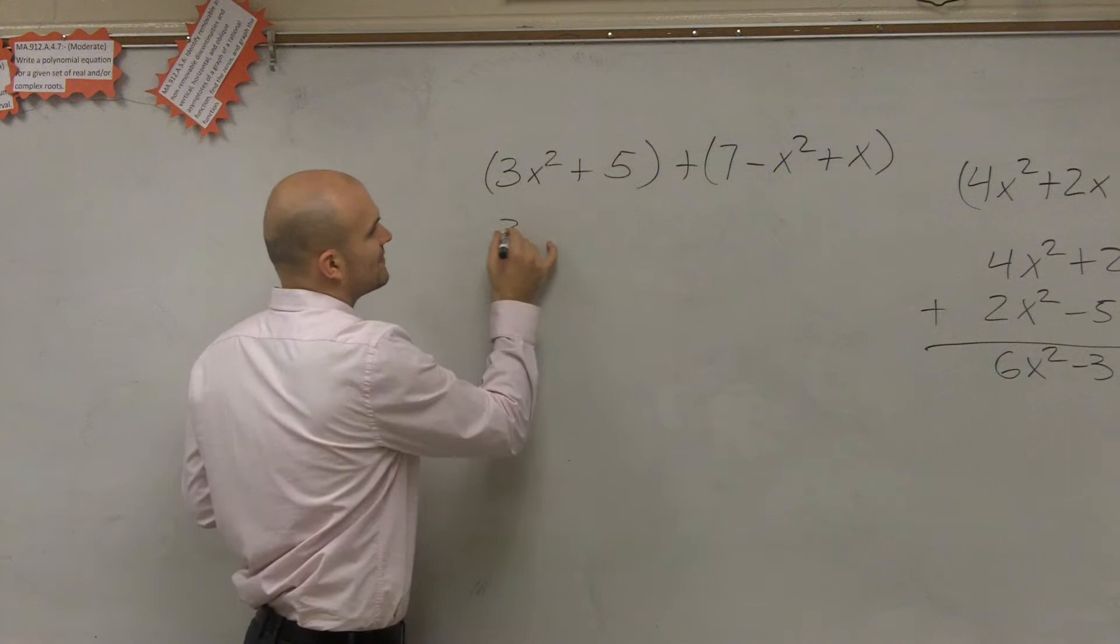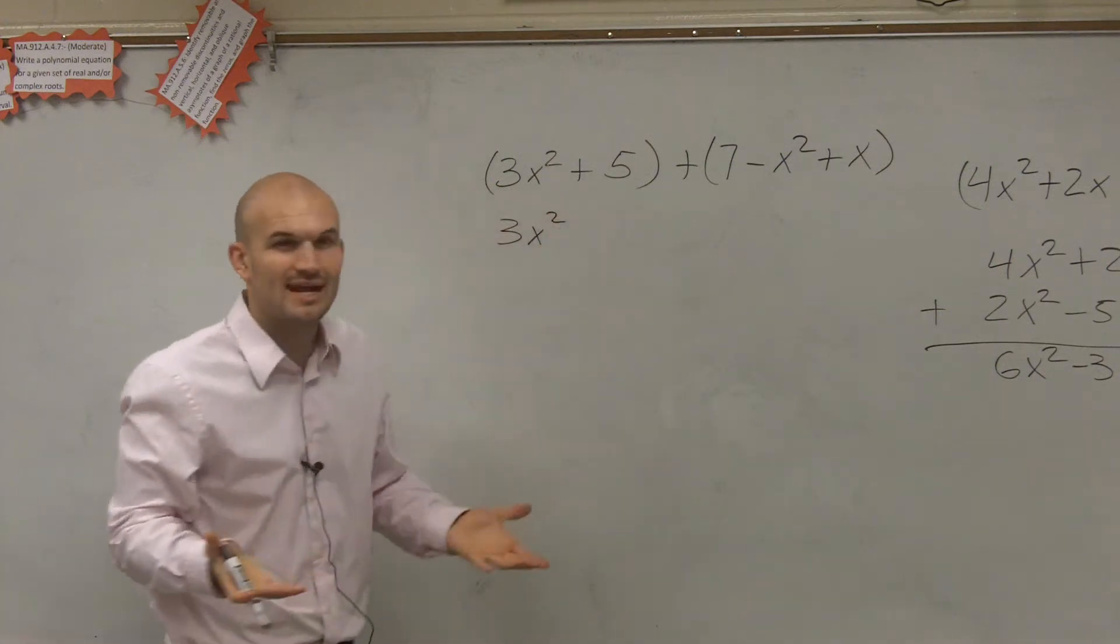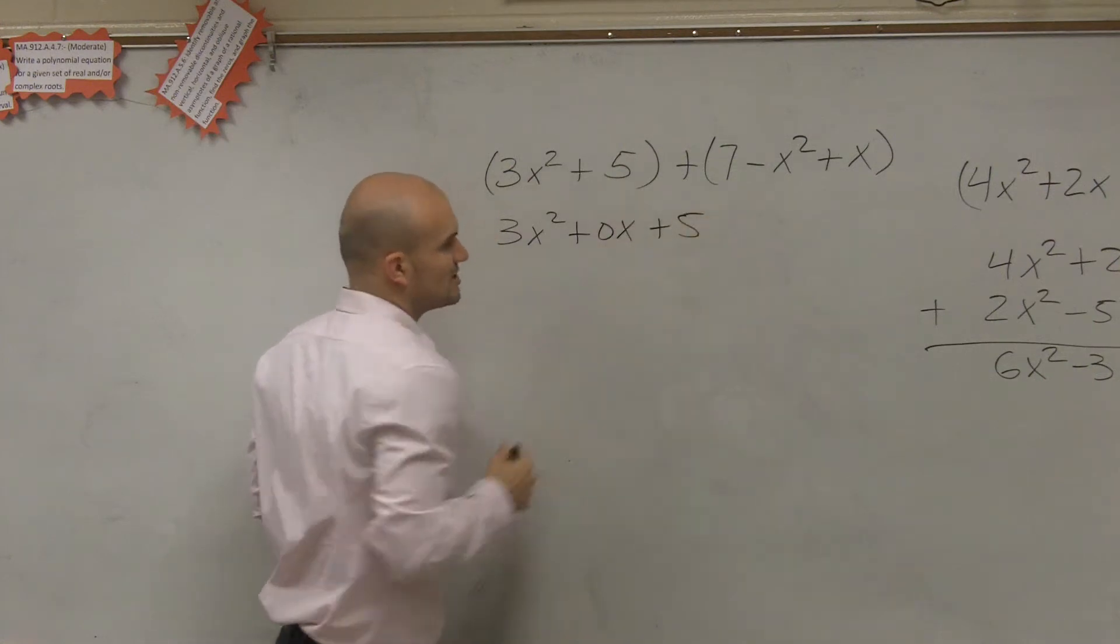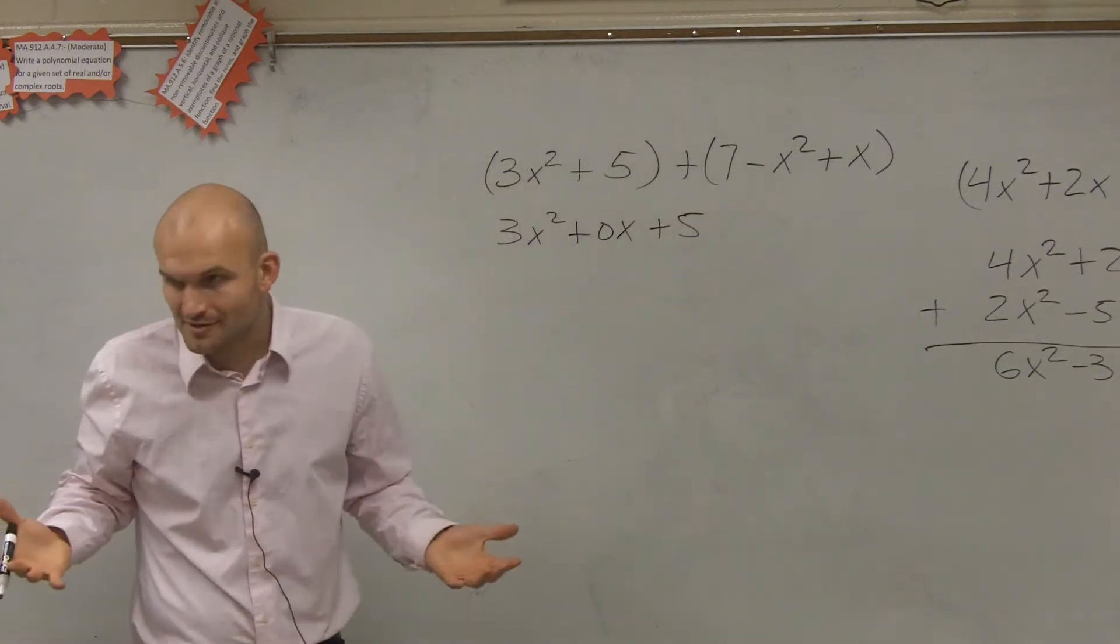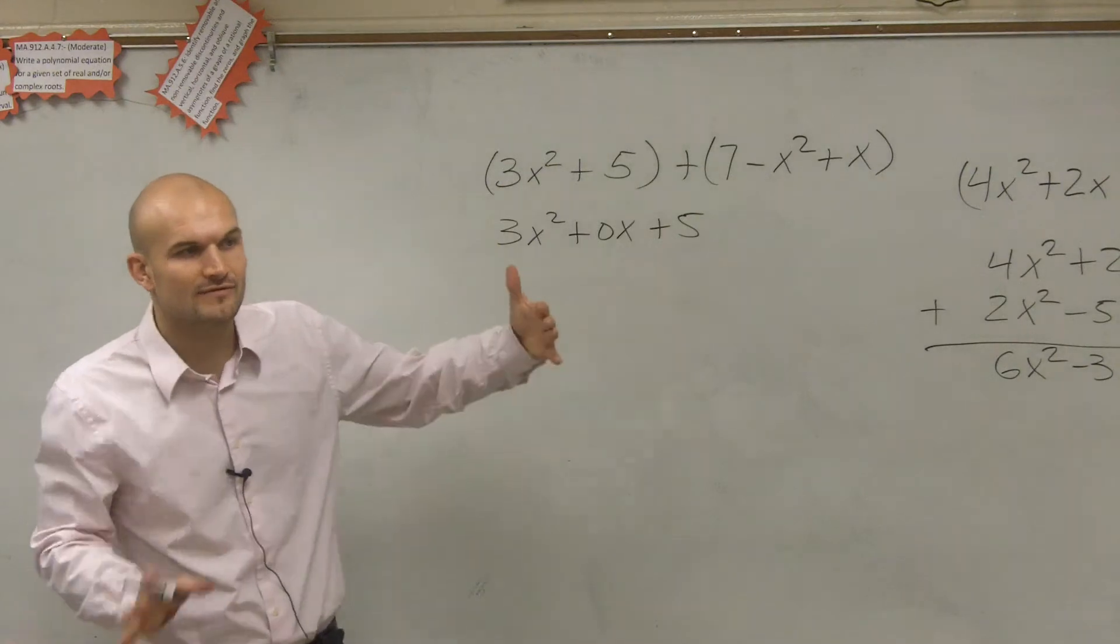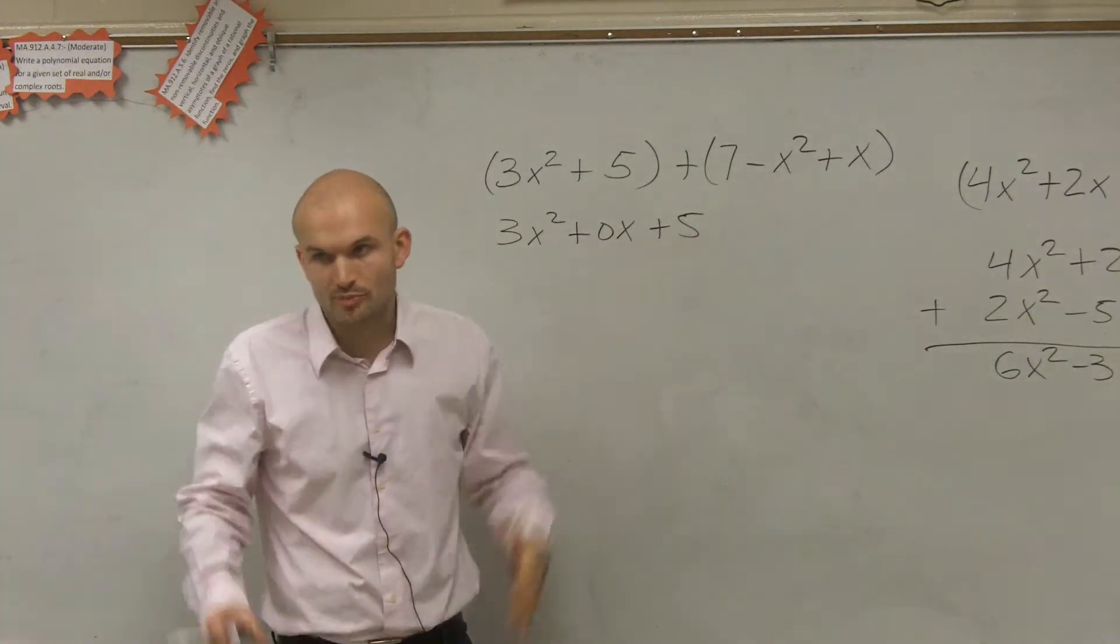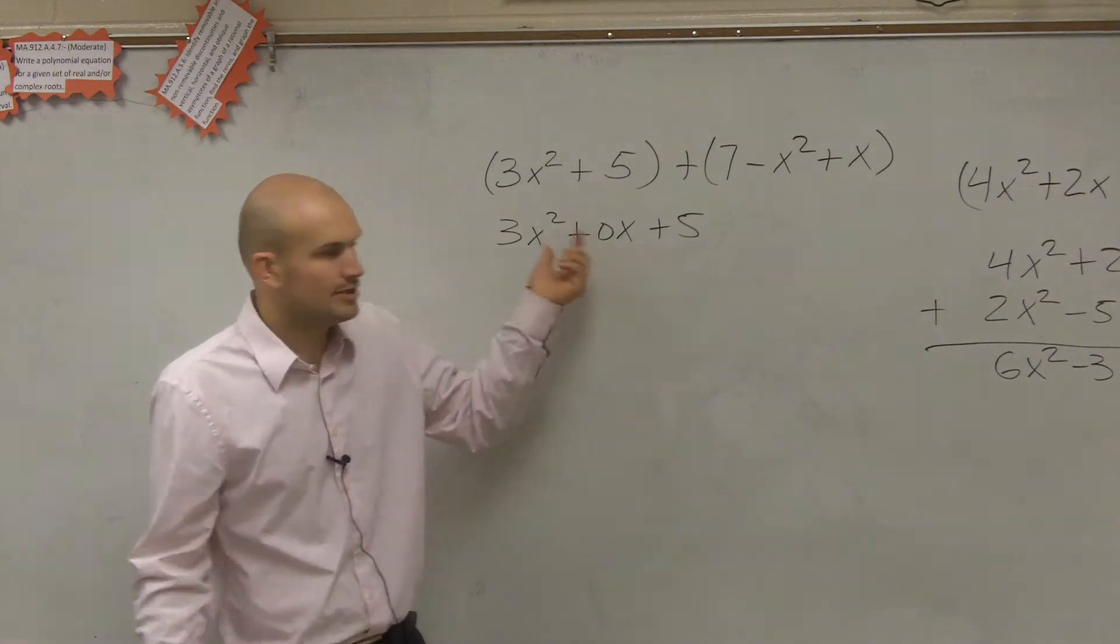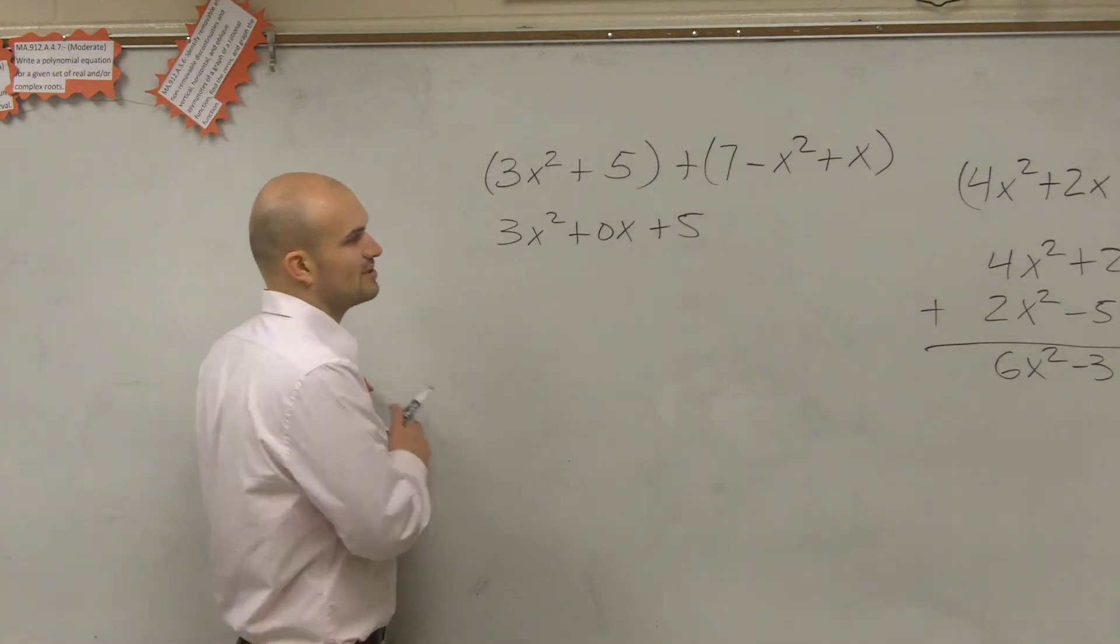So therefore, all I have is 3x squared. Now, I don't have an x term, right? So you could do this a couple ways. You could rewrite it as 0x plus 5 if you'd like. You don't have to. But if you want a place value, you could put it as 0x, because 0 times x is obviously 0. And then anything added to 0 is just going to be your original term.